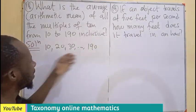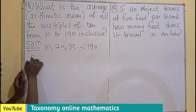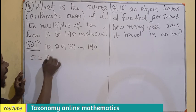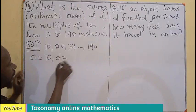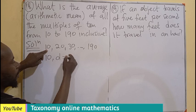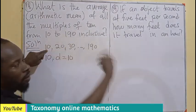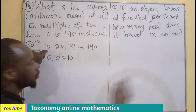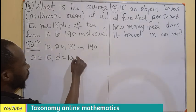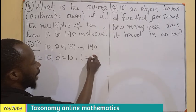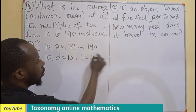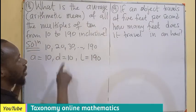You can see that this will give rise to the first term to be 10, the common difference to be 20 minus 10, will give us 10, which is already given to us as multiples of 10, meaning 10 groups of 10. Then we can also see that our last term is 190.